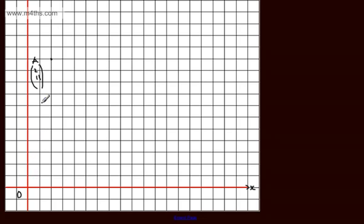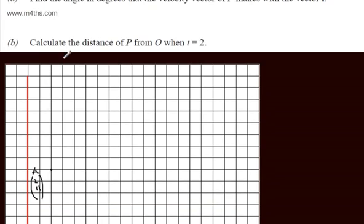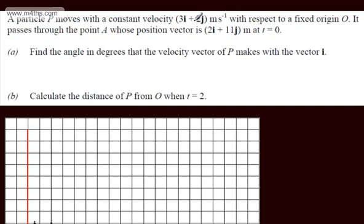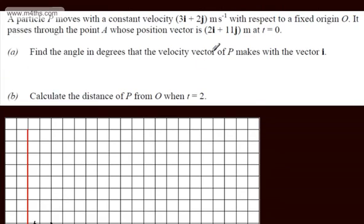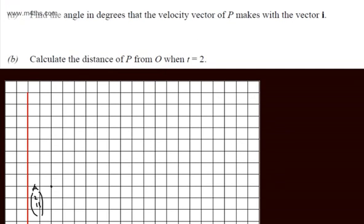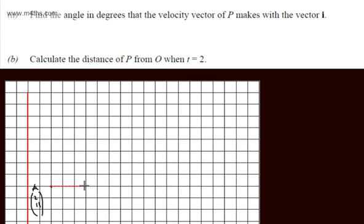If we wanted to work out the distance, it would be Pythagoras — the square root of 2 squared plus 11 squared. Now let's look at this particular velocity vector. This is telling me that we're going to start here and every second we move right 3 and up 2. So if I looked at the path that this particle was following, we'd go right by 3, up by 2, right by 3, up by 2, following this particular path right here.